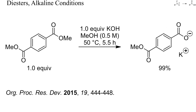The selective monosaponification of diesters can also be challenging. If the two carboxyl groups are electronically conjugated or separated by only one or two carbon atoms, then a single saponification can often be readily achieved, as in this example. Here, the remaining ester in the product was deactivated by the negative charge and by the enhanced electron density of the arene, and reacted with hydroxide therefore more slowly than the starting diester.